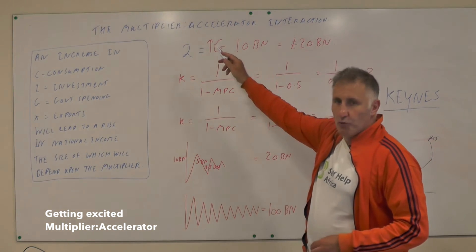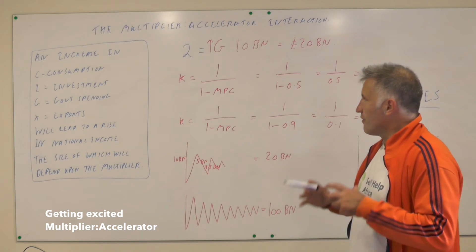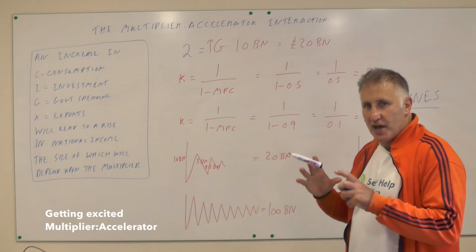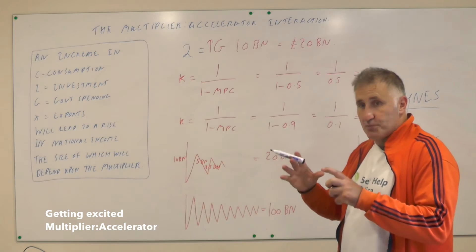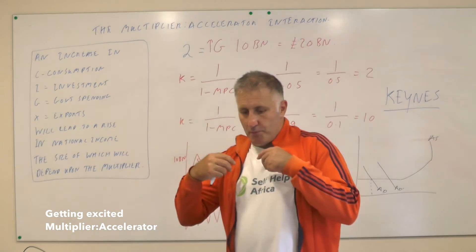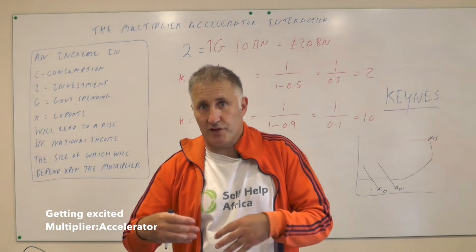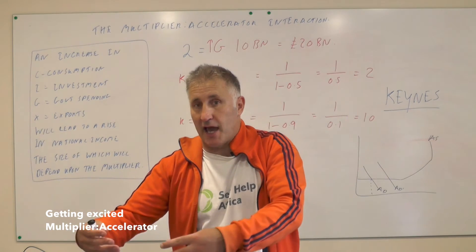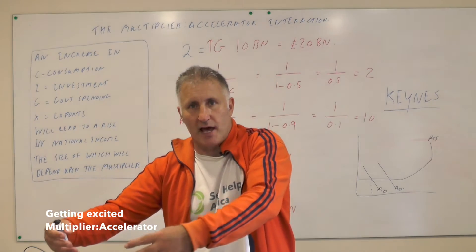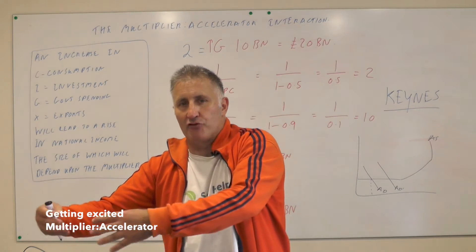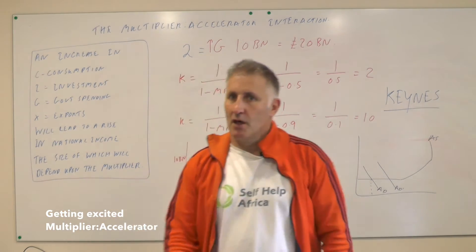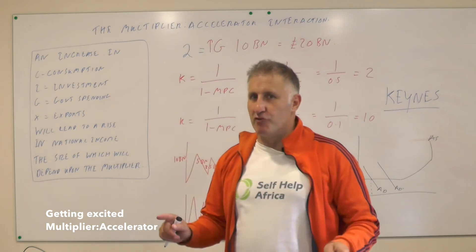So how does that all work? It works because of this thing called the multiplier. Fundamentally, when the government goes out and spends money, the people who get that money will then spend that money again, and then they will spend on someone else who will spend that money again. The money will go round and round the economy.